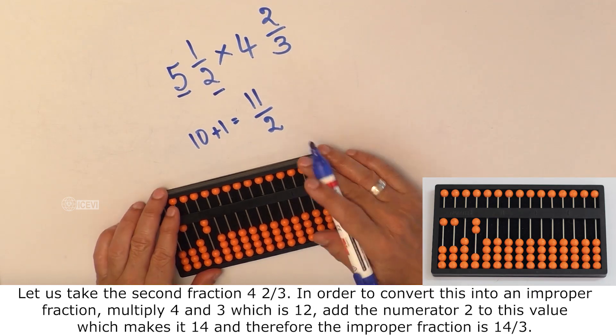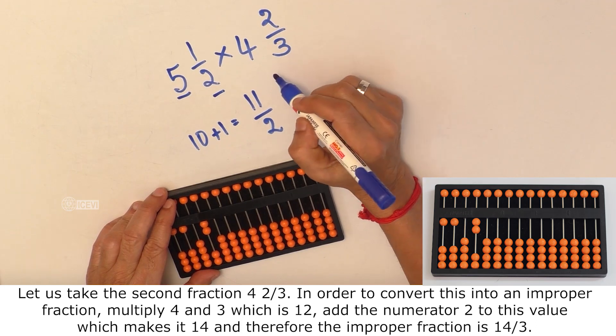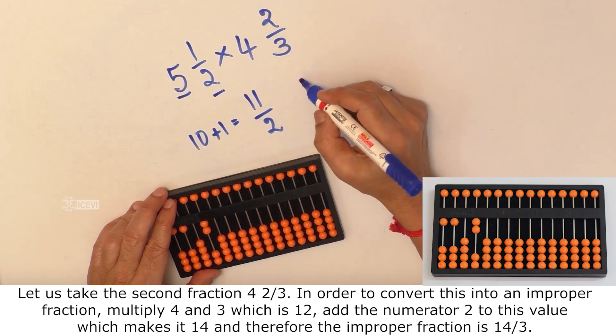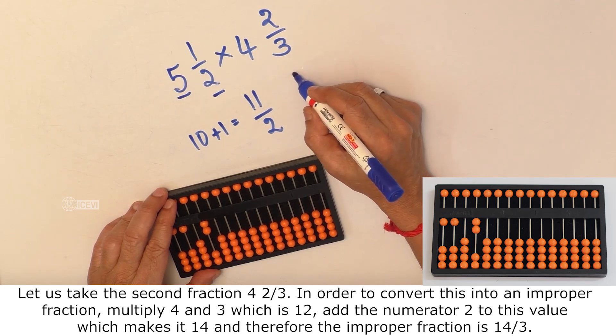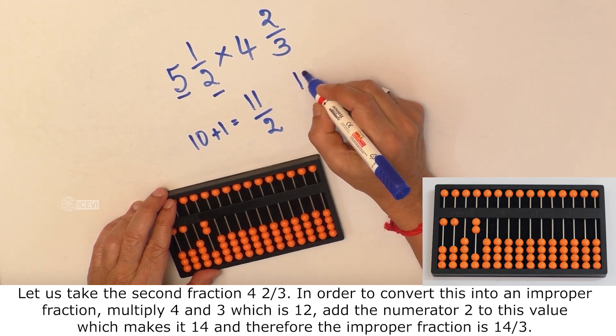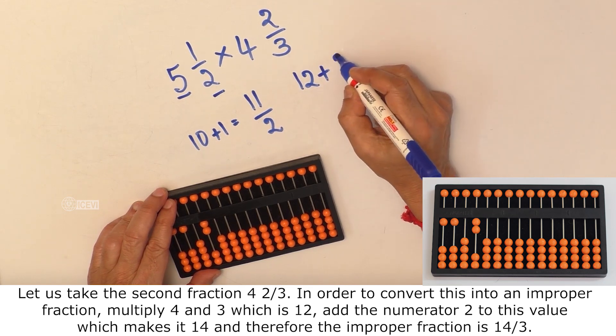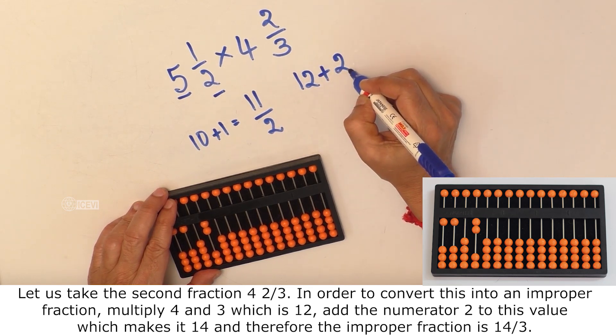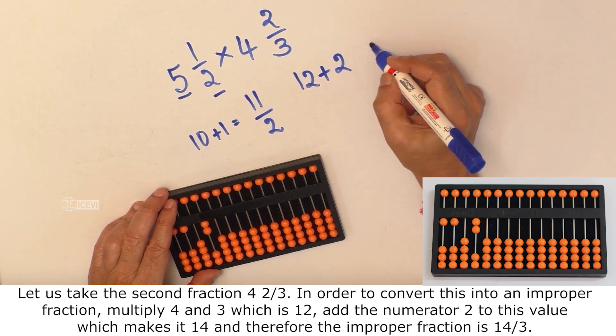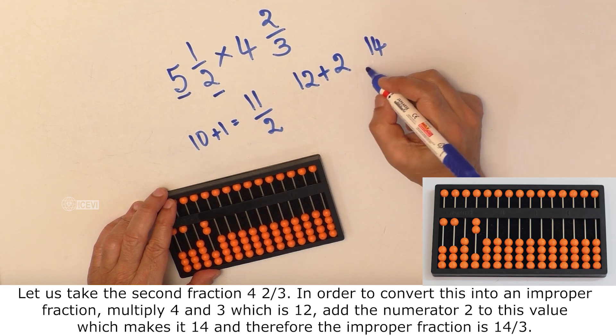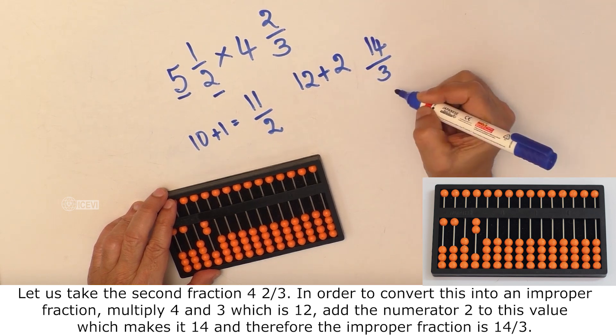In order to convert this into an improper fraction, multiply 4 with 3 which is 12. Add the numerator 2 to this which will make the value as 14 and the denominator doesn't change. And the improper fraction is 14/3.